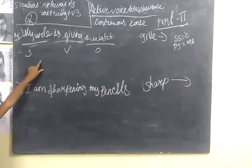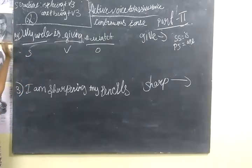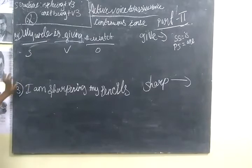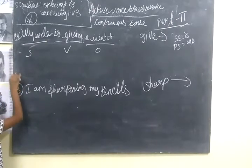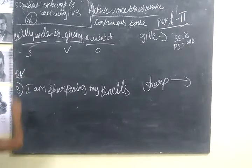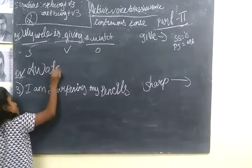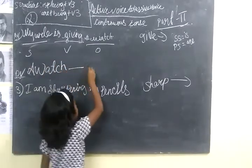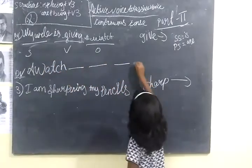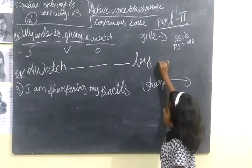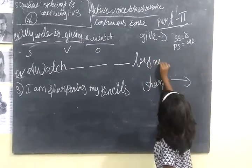This is a singular subject, so we should use the singular form — that is 'is'. So I am going to write the passive. 'A watch' — I am going to put 3 dashes and immediately put 'by my uncle'.